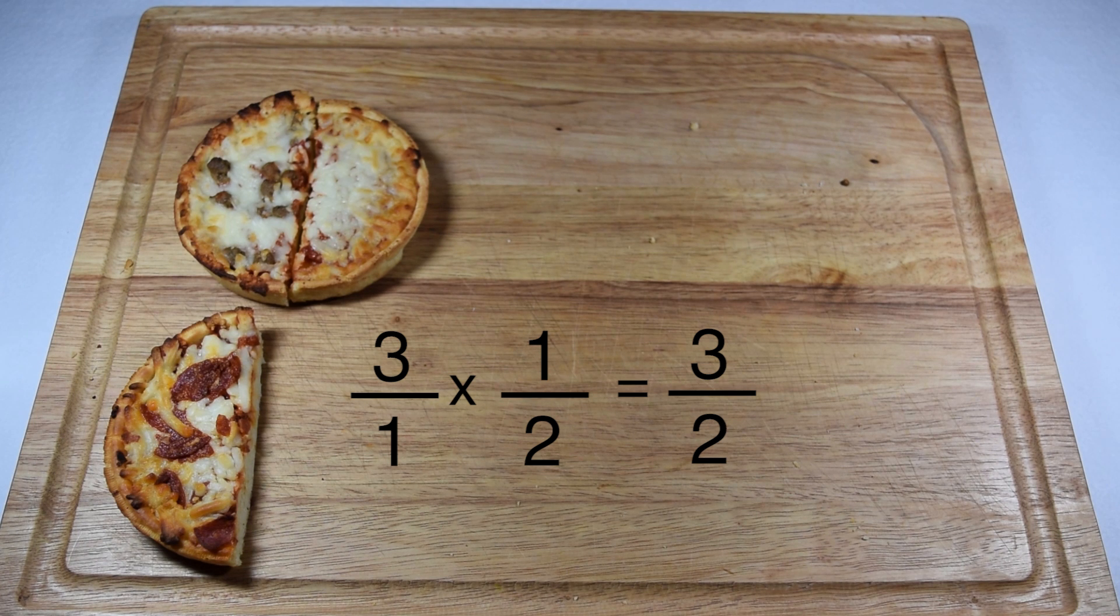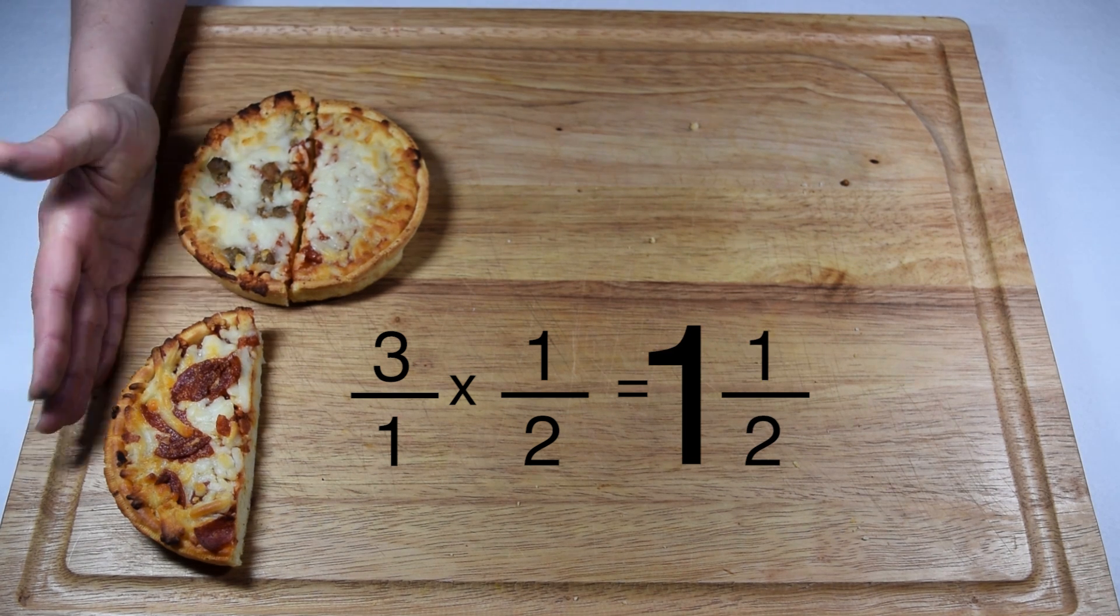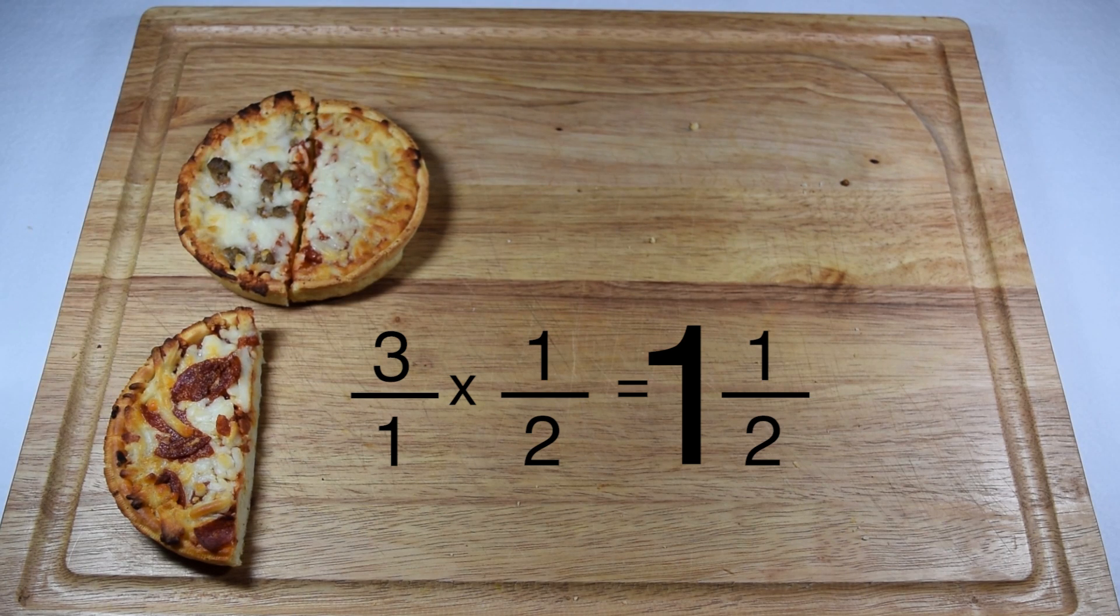We can take three halves and change it into a mixed number by dividing three by two. Two goes into three once with one left over, so three halves becomes one and a half, which is the same amount of pizza we had when we cut it up.